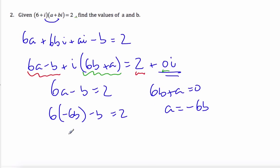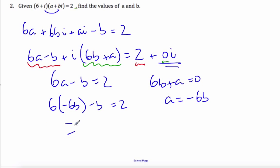Which then tells me that negative 13b is equal to 2. So b is negative 2 over 13.